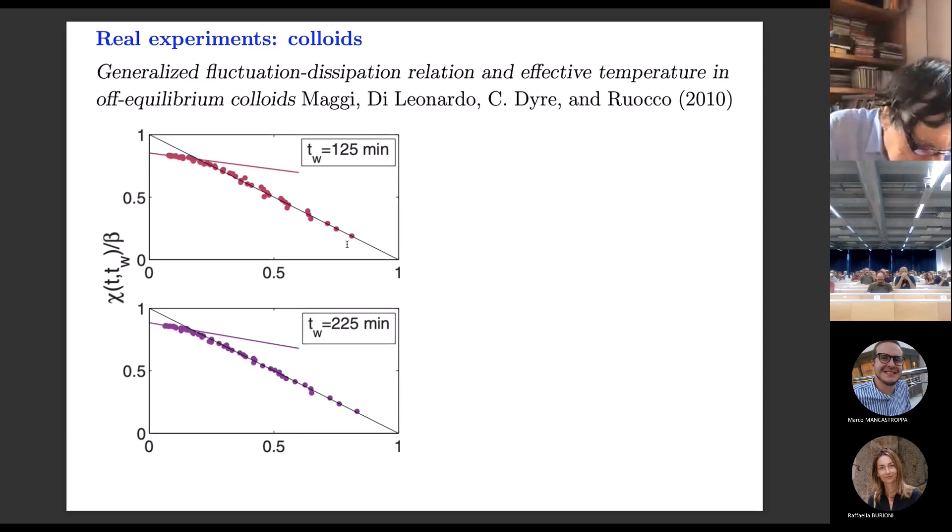Similar experiments can be done in different systems, glasses and so on. There's a lot of simulations that have been done in glasses. There are also real experiments which were done in laponite, for example, in colloids. One clearly sees that there is the same kind of plot, now normalized with the response function versus the correlation. One clearly sees in this particular case that there is a strong effect on the waiting time, and one has a feeling that when the waiting time goes to infinity, the response is showing to zero.